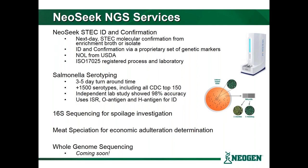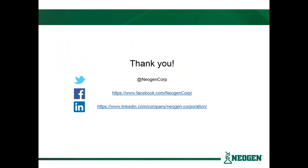To recap, Neogen is offering some of these services out of our Lincoln, Nebraska facility. Today we've got NeoSeq S-Tech identification, Salmonella serotyping, 16S metagenomics for spoilage identification, meat species identification, and whole genome sequencing — which we're progressing to offer in a more meaningful way. We're going to save 5 to 10 minutes for questions. If you aren't following us on social media, please feel free — information is on the screen — and with that we'll open it up to questions.